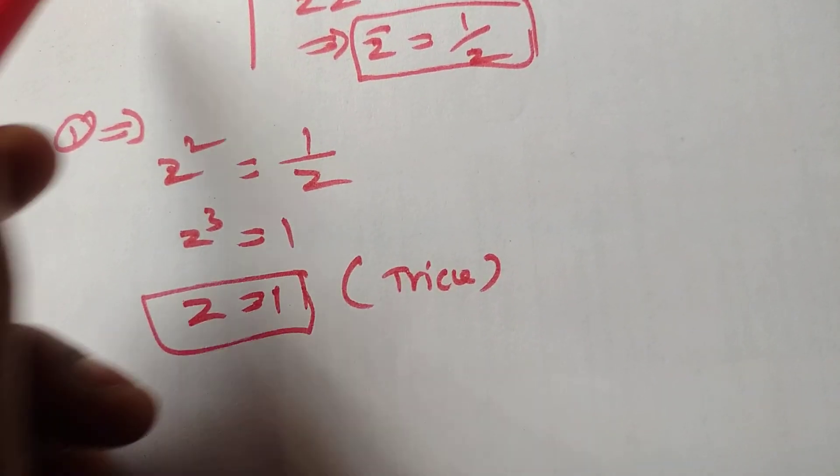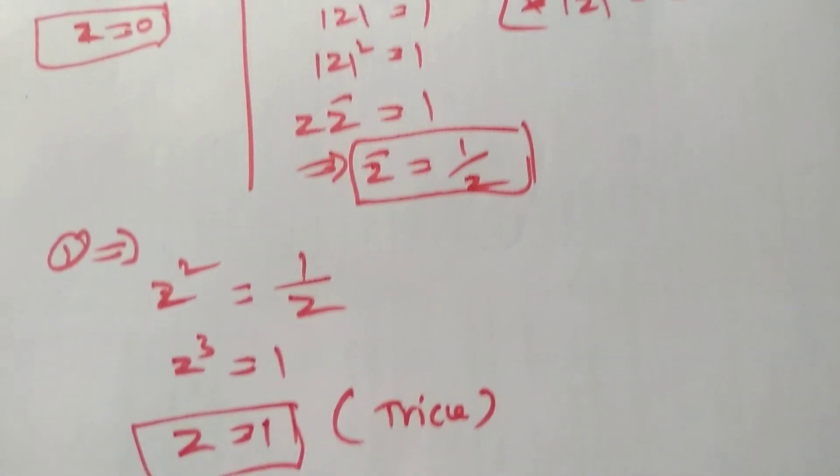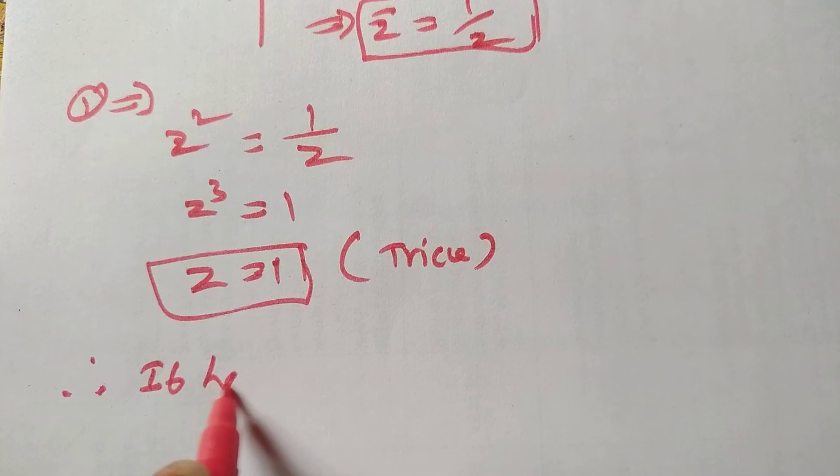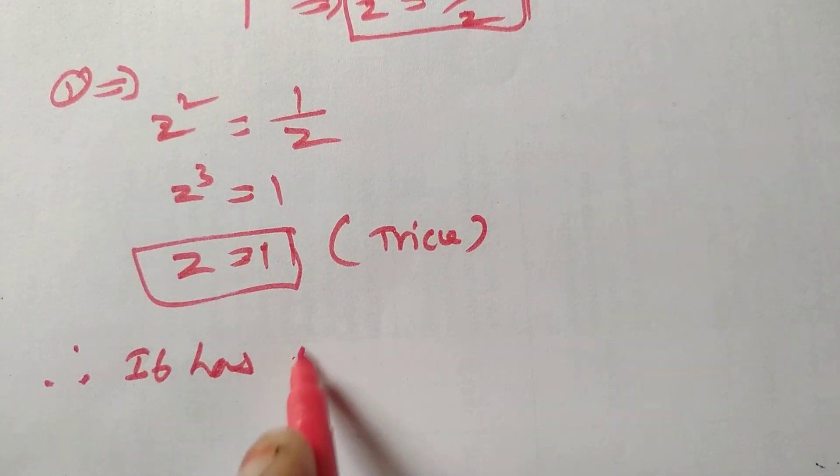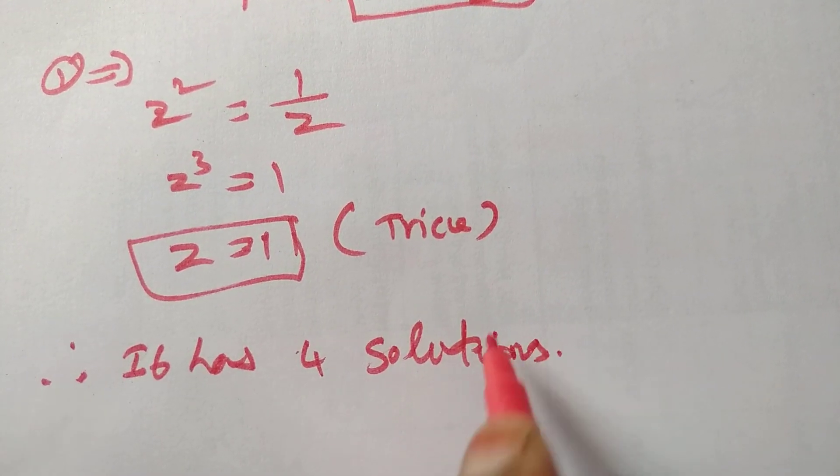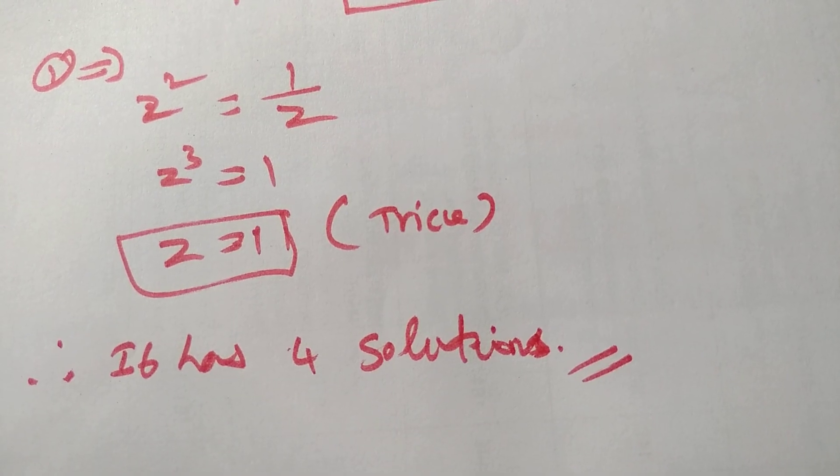So z equal to 1, omega, and omega squared. Including z equal to 0, we have four solutions total. I will see you in the next video.